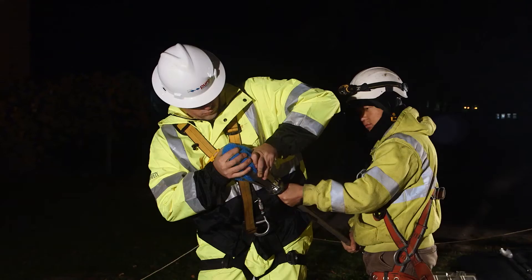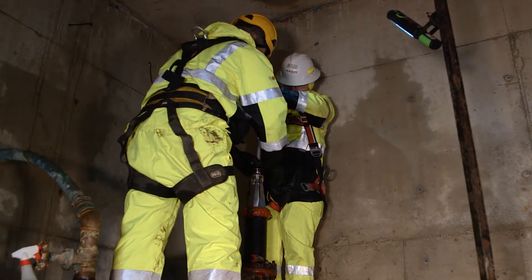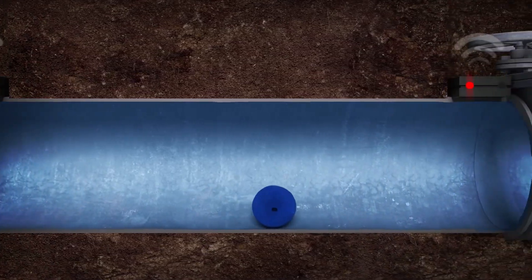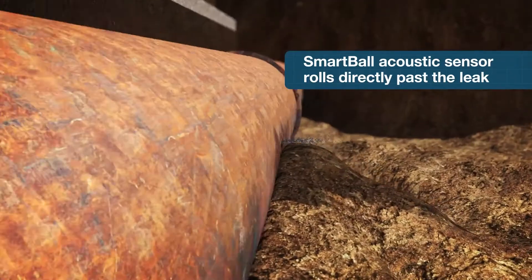To insert the SmartBall, it's put into a claw, and then we're able to lower the claw into the line while it's under pressure. When the ball is traveling through the line, the acoustic sensor is traveling in line and going right to the leak.